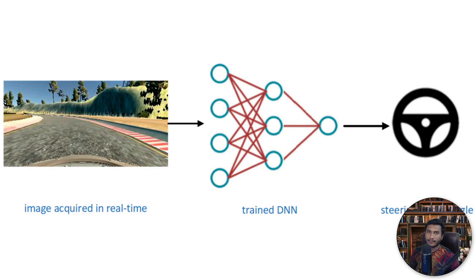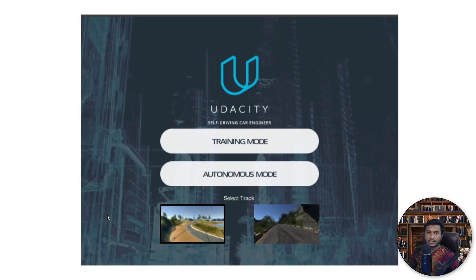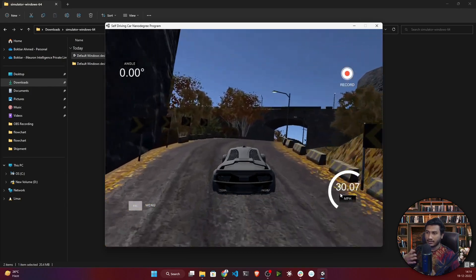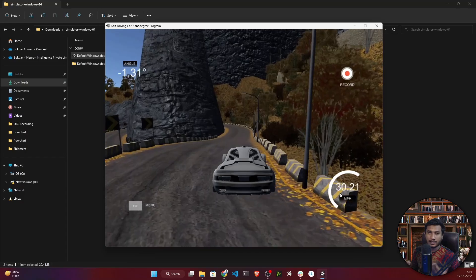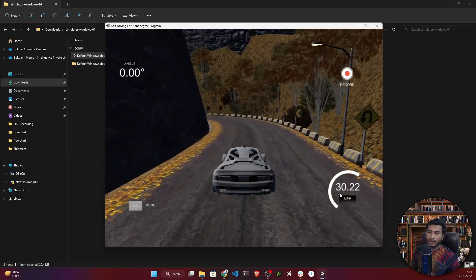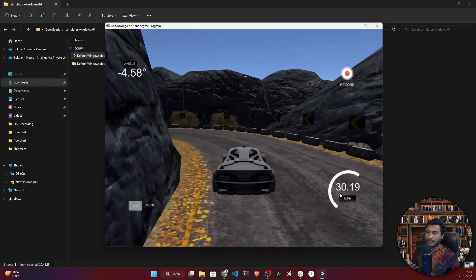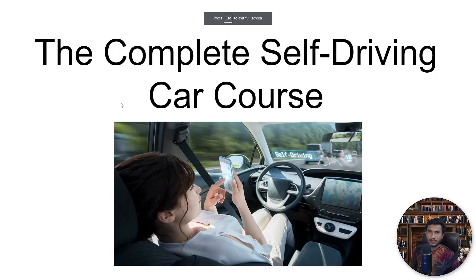Once we've trained our model on this data, it will be able to predict the steering angle for a given road and environment. Then I'll test the car in a completely new environment. Udacity already has an autonomous mode built in — we'll run the car on the second track to test our model. As you can see here, the car is driving autonomously after training. I'm not doing anything — it's a completely new environment and the car is managing everything well.